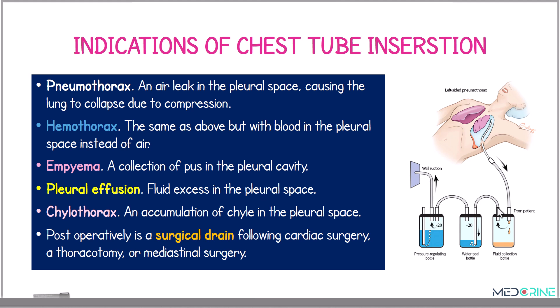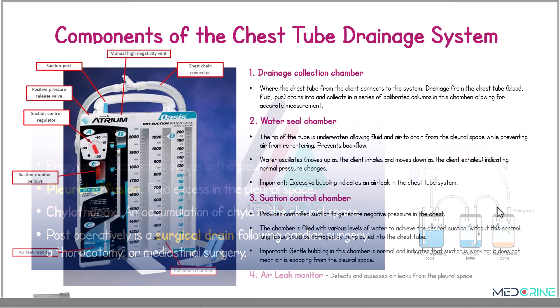We insert a chest tube in conditions such as empyema, which is the collection of pus in the pleural cavity; pleural effusion, where there is excess fluid in the pleural space; chylothorax, where there is an accumulation of chyle in the pleural space. We can also insert a chest tube as a surgical drain postoperatively following surgeries such as cardiac surgery, thoracotomy, or mediastinal surgery.